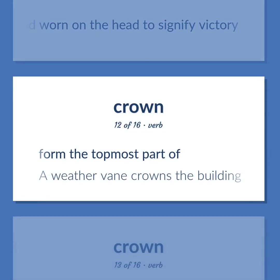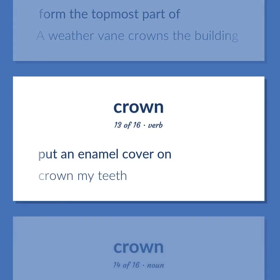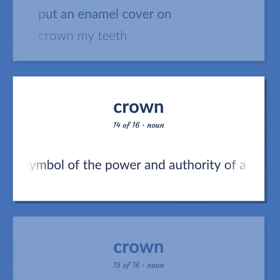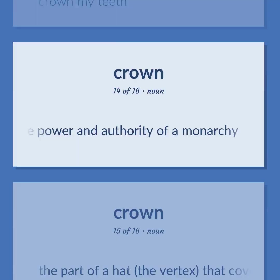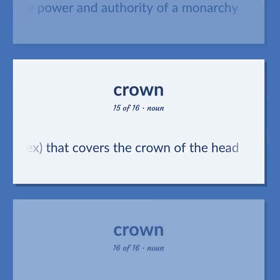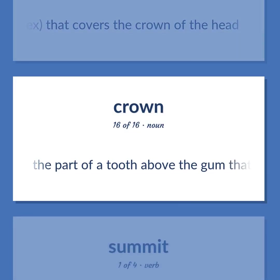Form the topmost part of — a weathervane crowns the building. Put an enamel cover on — crown my teeth. The crown, or the reigning monarch, as the symbol of the power and authority of a monarchy. The part of the hat — the vertex — that covers the crown of the head. The part of a tooth above the gum that is covered with enamel.